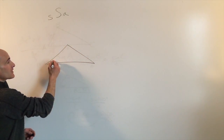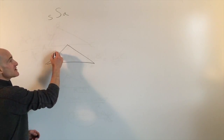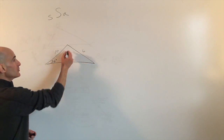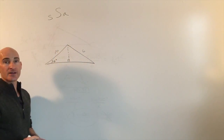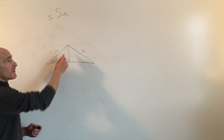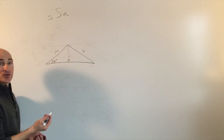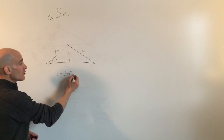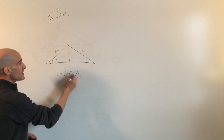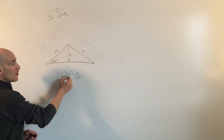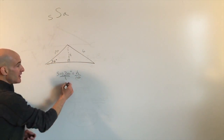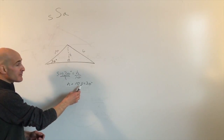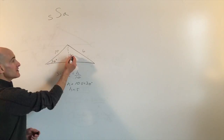For example, say this angle is 30 degrees, this side is 10, and this side over here is 6. Drop an altitude — now we have a right triangle on the left. Using right triangle trigonometry: sine of 30 equals h over 10, so h equals 10 times sine of 30. Sine of 30 is one half, so this height is 5.